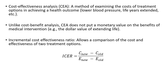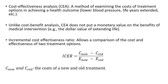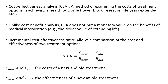The formula is given as follows, where C_new and C_old represent the cost of a new and old treatment, and E_new and E_old represent the effectiveness of a new and old treatment. So we might be looking at a cancer treatment, for example — you have an old treatment and a new treatment.